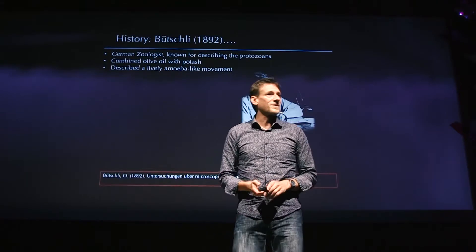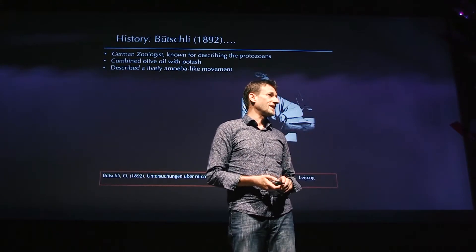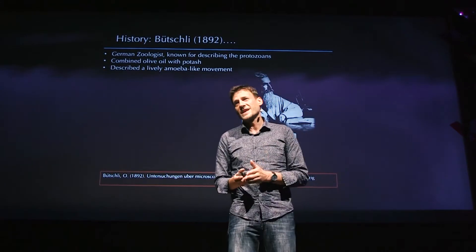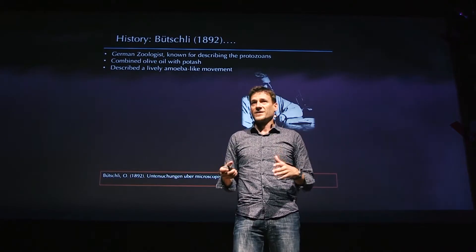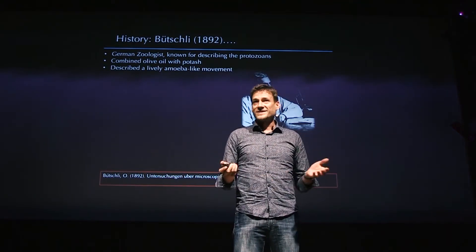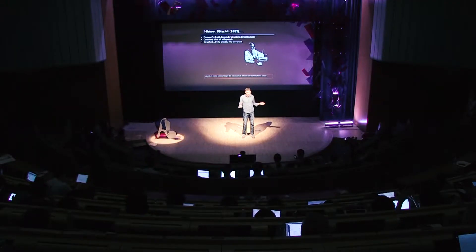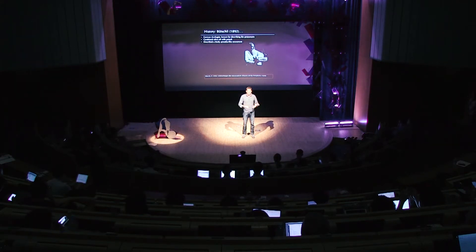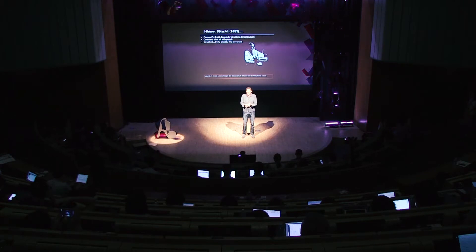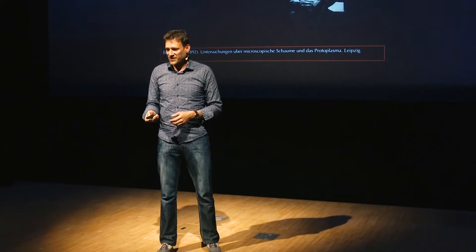Historically, we can start with this researcher in the 1800s who was working on protozoa — he was interested in how the amoeba moves, which has a very nice fluid motion. He made an artificial life model of the amoeba by taking some fresh olive oil and potash — potassium hydroxide — and mixing these chemicals together. He made a little system in the lab that was moving quite a lot like the amoeba.